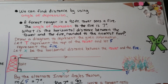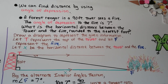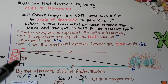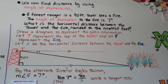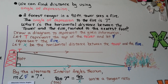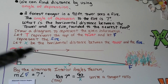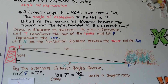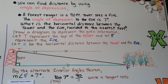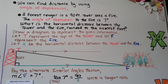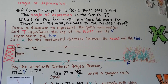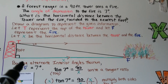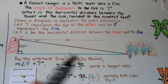We can also find distance using angle of depression. A forest ranger in a 90-foot tower sees a fire. The angle of depression to the fire is 7 degrees. What is the horizontal distance between the tower and the fire rounded to the nearest foot? We draw a diagram: T represents the top of the tower, F represents the fire, and X is the horizontal distance between them.